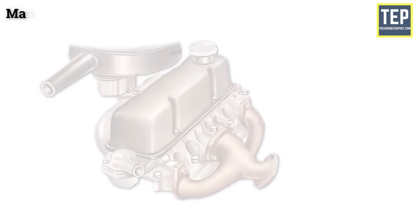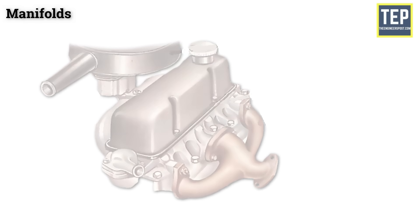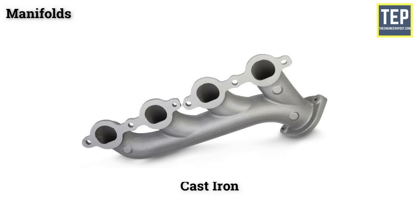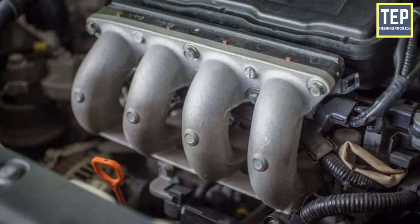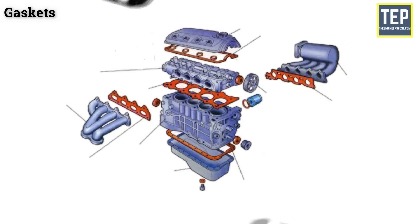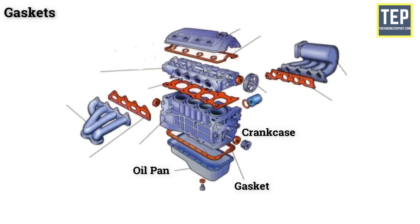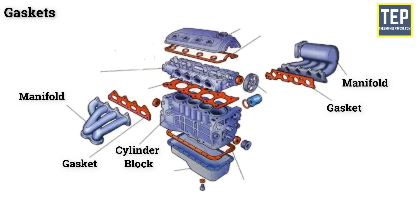Manifolds are separate sets of pipes attached to the cylinder head which carry the air-fuel mixture and exhaust gases. They are generally made of cast iron to withstand the high temperature of the exhaust gases. Gaskets are used to provide a tight fitting joint between two surfaces, found at the joint between the cylinder head and cylinder block, between the crankcase and oil pan, and between the cylinder block and manifold.